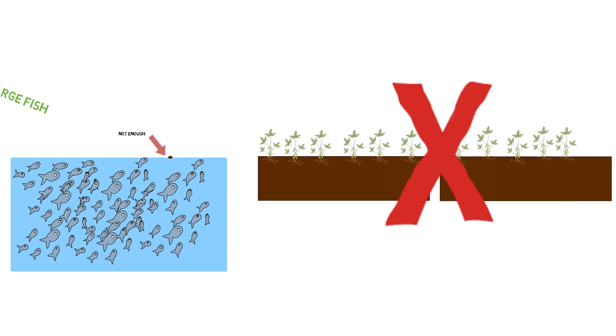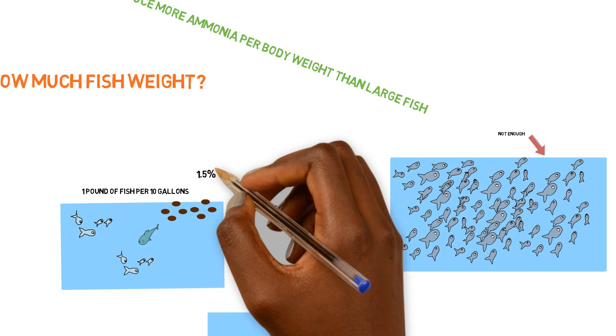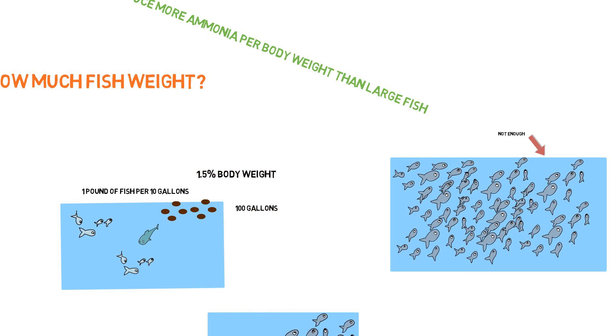So the feed is the main missing variable inside of the equation of this one to whatever grow bed ratio. So we're going to say that we're going to be feeding our tilapia or feeding our fish 1.5 percent of the body weight, 1.5 percent. That's how much we're going to be putting in.